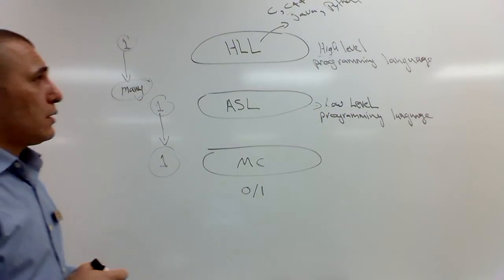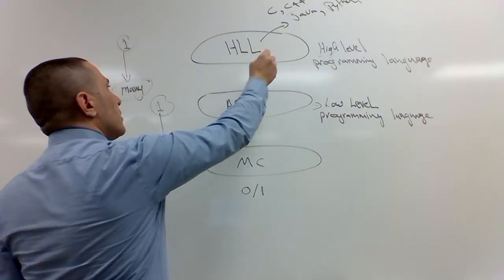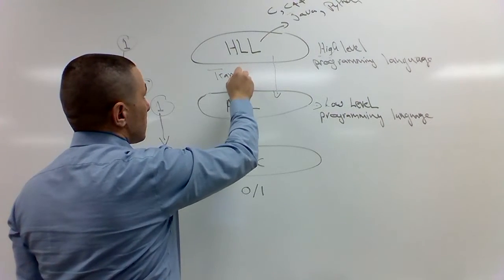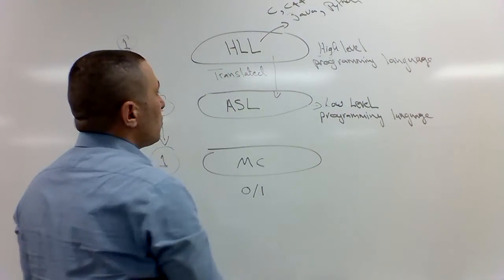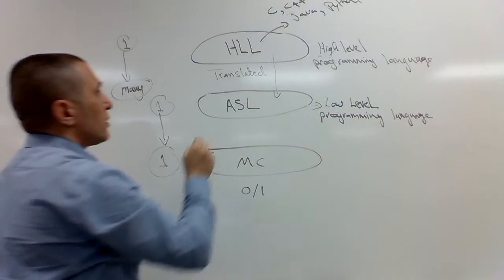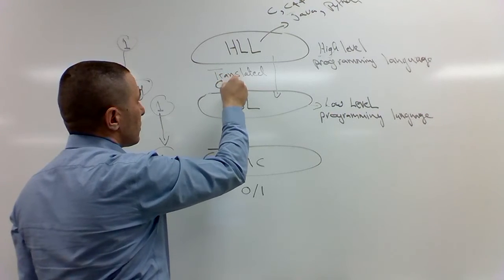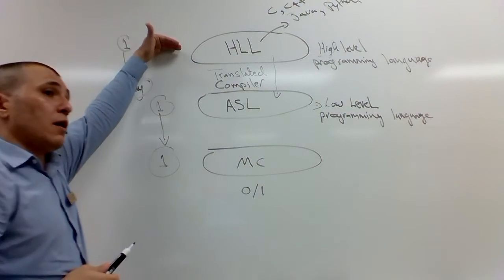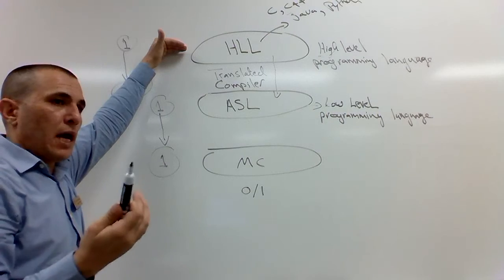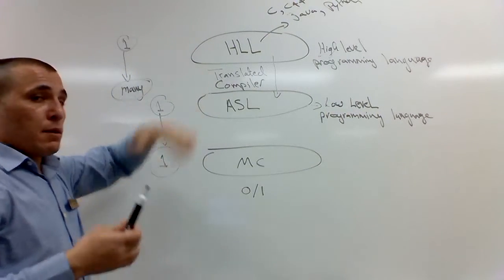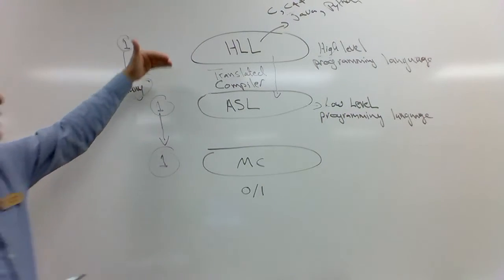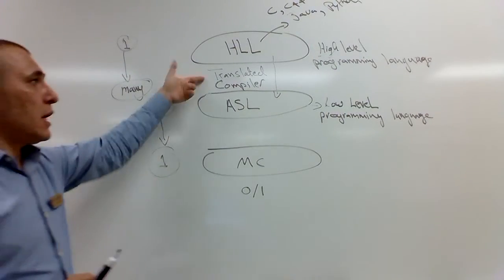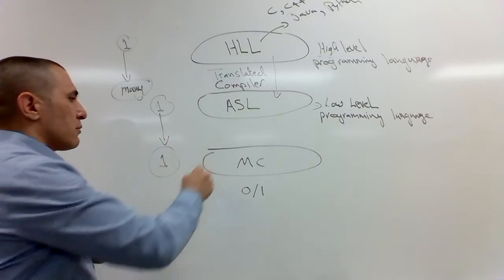Every high-level language is translated to assembly language using what we call a compiler. Compiler is a translator, translates high-level languages which will have lots of details hidden in the back. Why do they have lots of details hidden? Making it more user friendly, making it easy to use, near English, near the syntax of English.